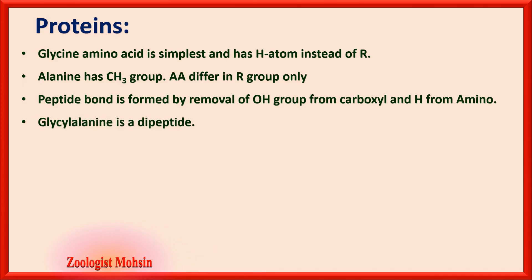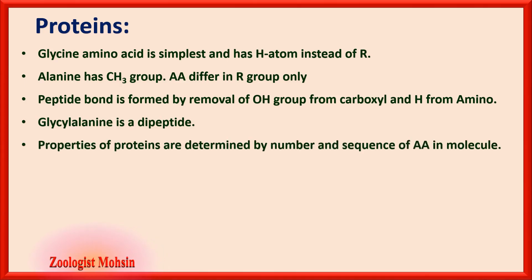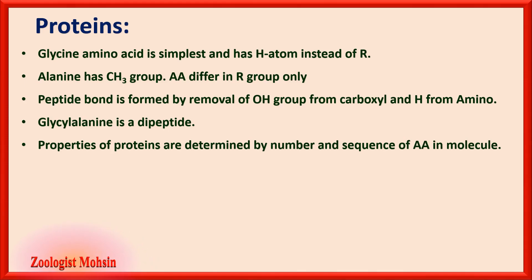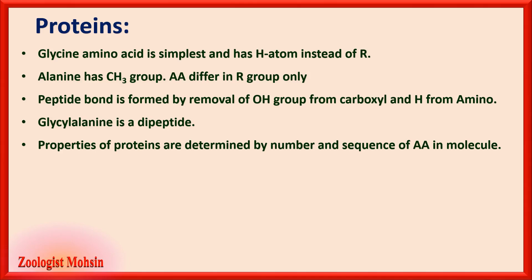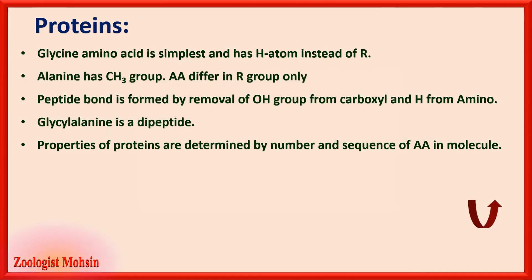Glycyl-alanine is a dipeptide, meaning it is made up of two amino acids. The properties of proteins are determined by the number and sequence of amino acids in the molecule. If asked on which factor protein properties depend, the answer is: the number of amino acids in the molecule as well as the sequence or pattern of amino acids.